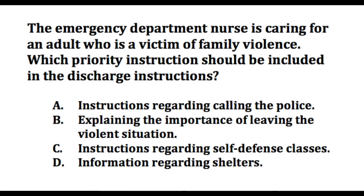The answer here is D. Tertiary prevention of family violence includes assisting the victim after the abuse has already occurred. The nurse should provide the client with information regarding where to obtain help, including a specific plan for removing the self from the abuser and information regarding escape, hotlines, and the location of shelters. An abused person is usually reluctant to call the police. Explaining the importance of leaving the violent situation is important, but a specific plan is necessary.